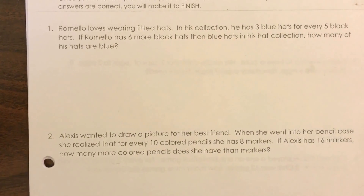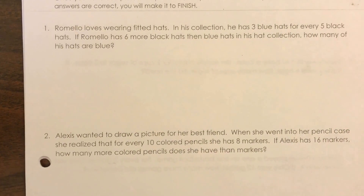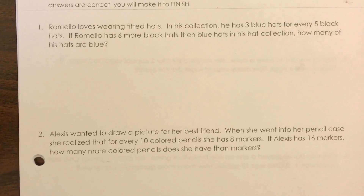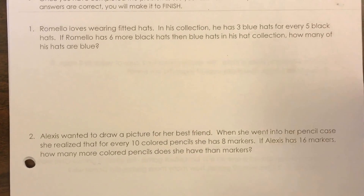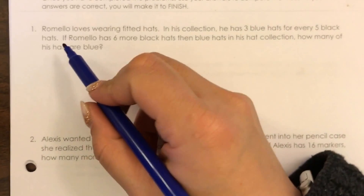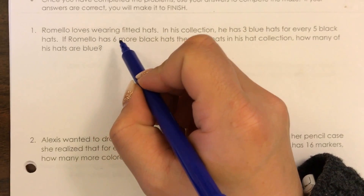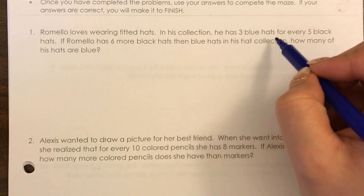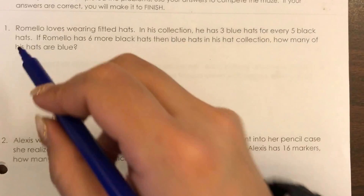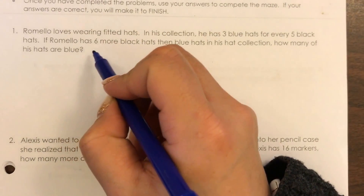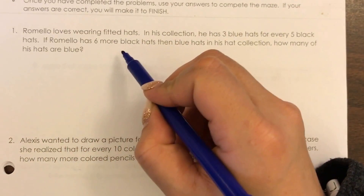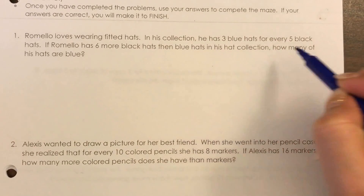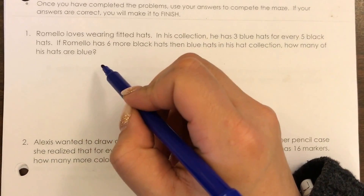In this video I'm going to show you how to solve a ratio problem using a part-part-total-difference chart. Looking at number one, I'll read the problem first. It says Romello loves wearing fitted hats. In his collection he has three blue hats for every five black hats. If Romello has six more black hats than blue hats in his hat collection, how many of his hats are blue.